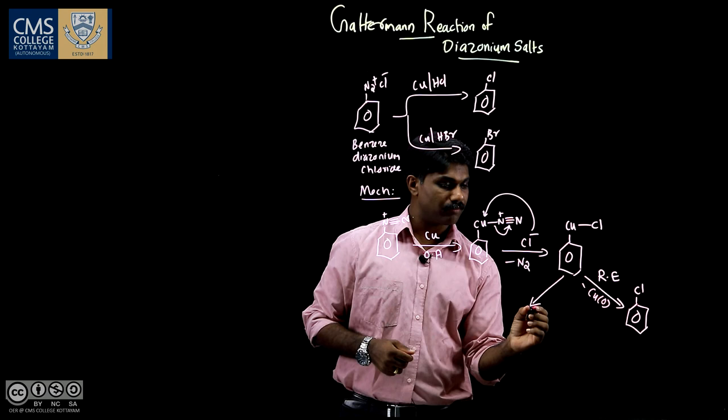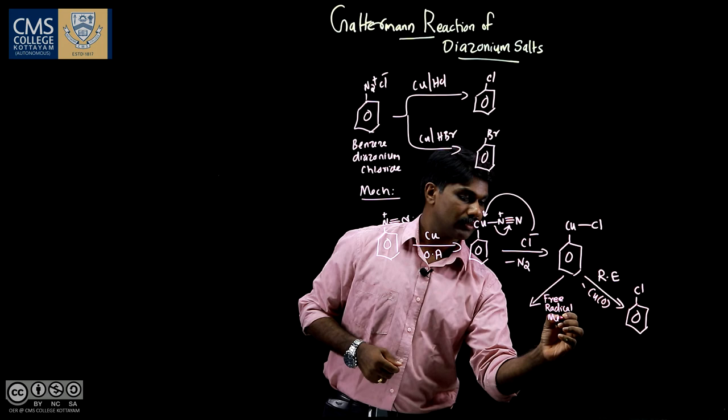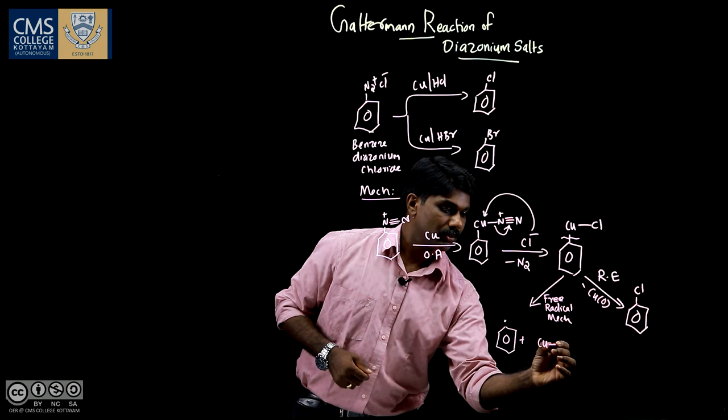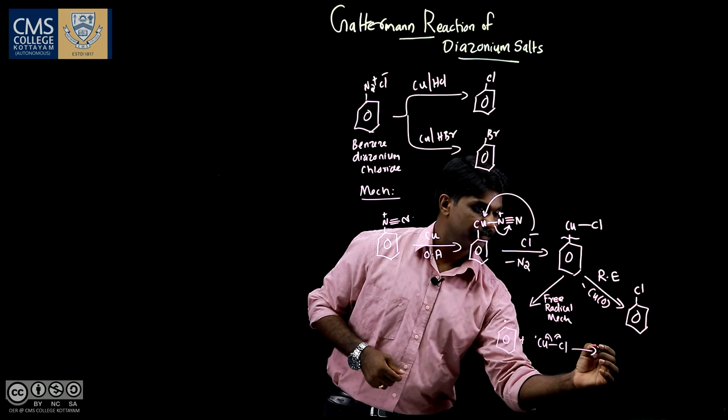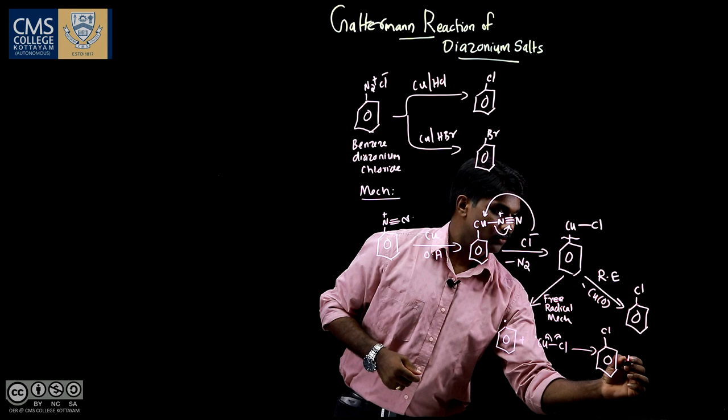This also can be converted into the product by a free radical mechanism. Here cleavage undergoes and we get the phenyl radical and CuCl. Then this again undergoes homolytic cleavage and we get copper in zero oxidation state.